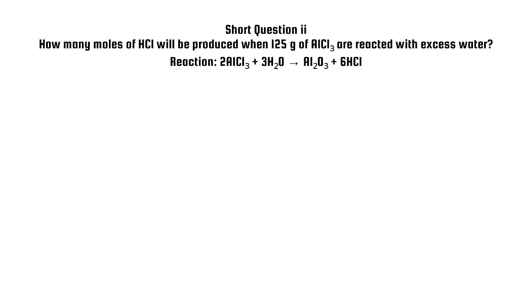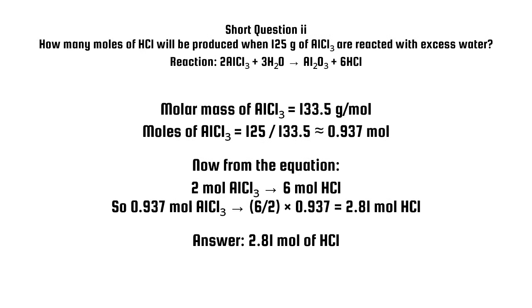Short question 2. How many moles of HCl will be produced when 125G of AlCl3 are reacted with excess water? Molar mass of AlCl3 equals 133.5 grams per mole. Moles of AlCl3 equals 125 divided by 133.5 almost equals 0.937 mole. Now, from the equation, 2 moles AlCl3 gives 6 moles HCl. So, 0.937 moles AlCl3 gives 6 halves times 0.937 equals 2.81 mole. Answer: 2.81 moles of HCl.